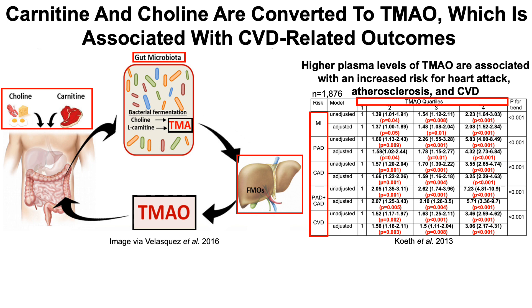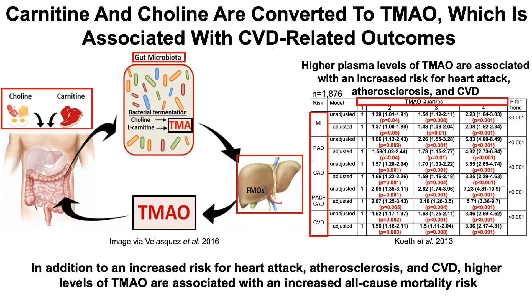What we can see is that for each quartile above the lowest quartile of TMAO, there's an increased risk for each of these cardiovascular disease-related outcomes. And it isn't just an increased risk for heart attack, atherosclerosis, and CVD — higher levels of TMAO are associated with an increased all-cause mortality risk.